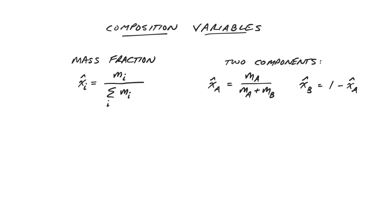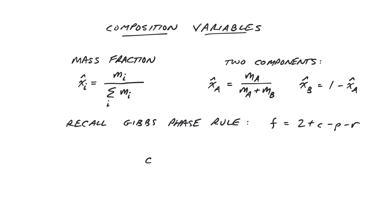So what happens to the number of degrees of freedom of a phase if we have more than one component? According to Gibbs phase rule, F equals 2 plus C minus P. Thus, for every additional component we add, we add one additional degree of freedom. But for each component we add, we also add one composition variable. This means that if we fully define the composition of our phase, we are left with two additional intensive variables, such as temperature and pressure, to fully define the intensive thermodynamic state. This aligns nicely with our previous understanding, based on the state postulate, of how many intensive properties are needed to define the state of the phase after specifying what molecules are present. Gibbs phase rule is telling us we need to define both the identity and relative numbers of each type of molecule if we have a mixture.